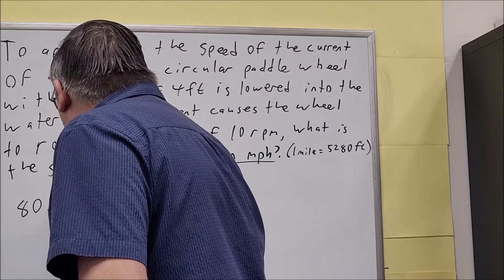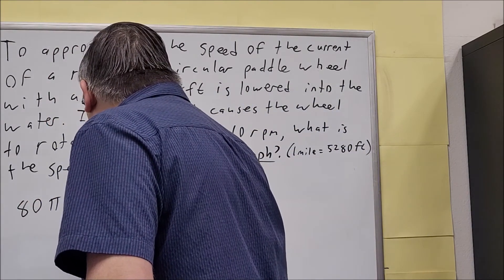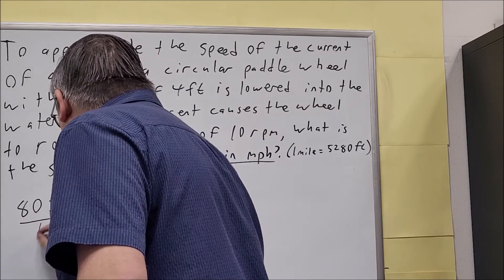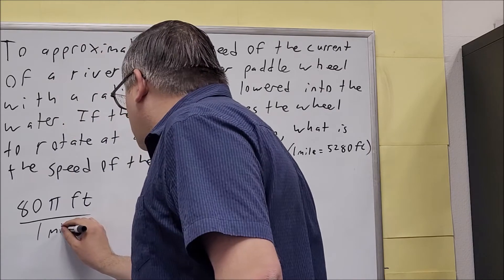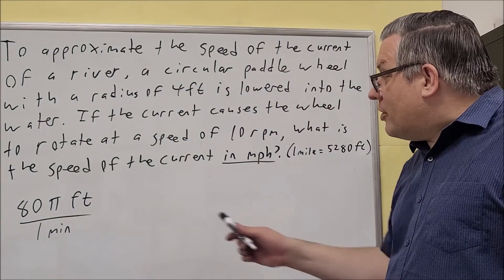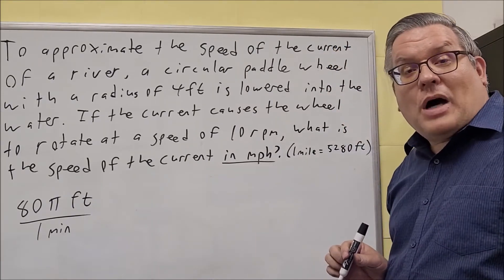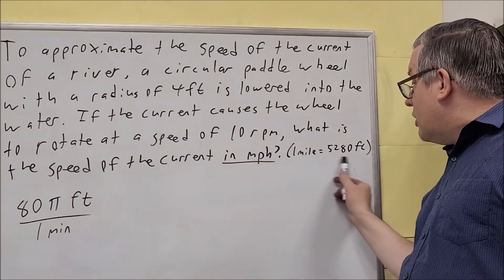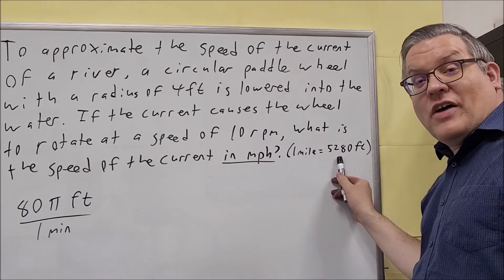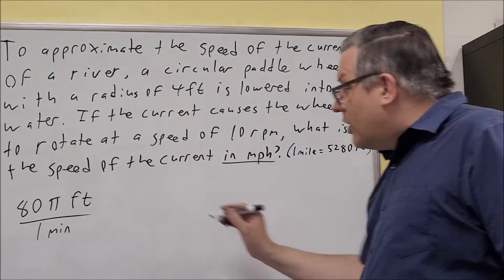So I have 80π feet per minute and let's write it this way with the minutes on the bottom like that. Now I have to do a couple conversions here. First of all I need to change the feet into miles. Now I can do that by the conversion that they gave us right here. It says one mile is equal to 5,280 feet. Let's do that first.